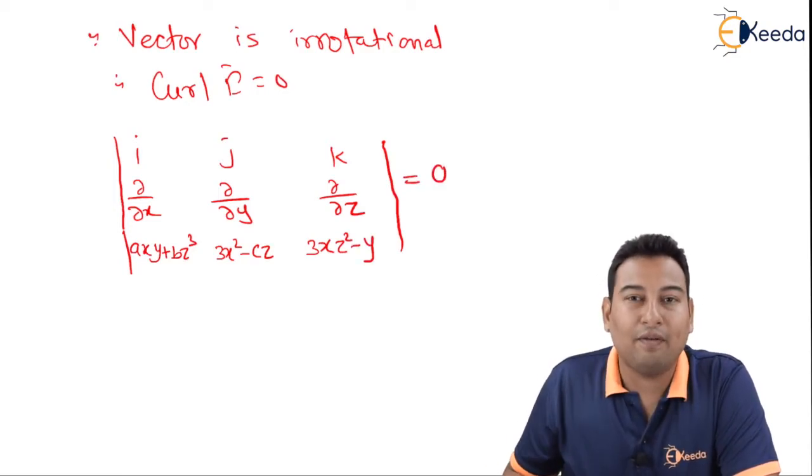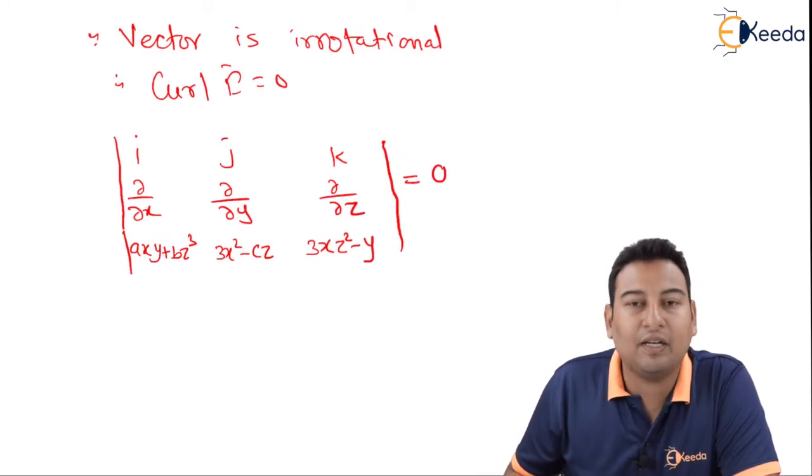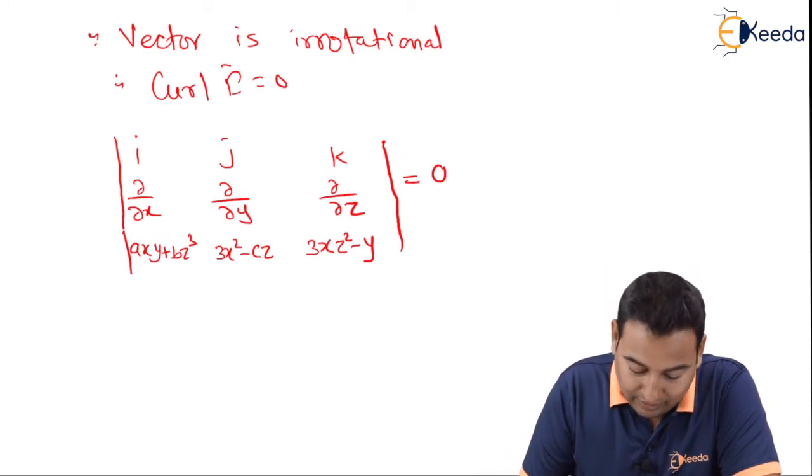Which is equal to 0. This is already equal to 0 given. We need to simplify this determinant and we'll get the value of ABC. Let's start doing it.